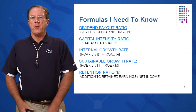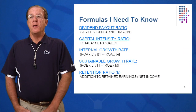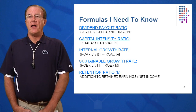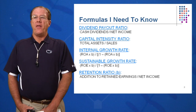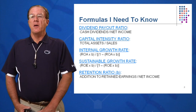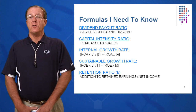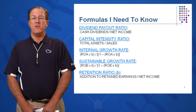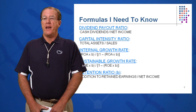Several key formulas you need to know. First, the dividend payout ratio — what exactly is that? It's cash dividends paid out divided by net income. The other side of that is the retention ratio: how much are you going to keep? Whatever portion of your net income that you don't give away, you keep. This is called the retention ratio or plowback — additions to retained earnings divided by net income.